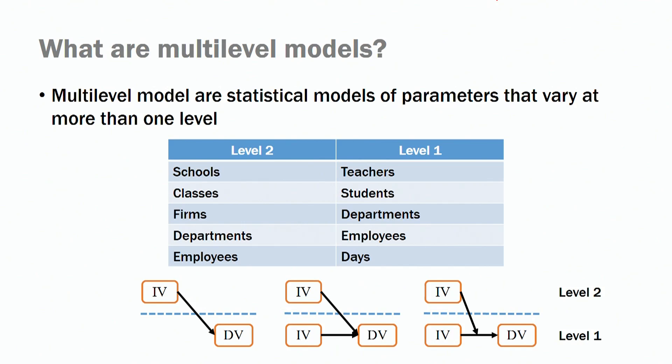Bringing this concept to organizations: we have departments embedded in firms, employees embedded in departments, and days embedded in employees. For example, you may have one leader managing four, five, or ten followers. Those followers are embedded in that particular leader — their observations are not independent. You need to take that into consideration when running models. It could be that the leader is extremely extroverted, and that has an effect on how these followers behave, or a more introverted leader could also impact follower behavior.